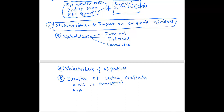Likewise, shareholders and management can be on one side versus the government on the other. The government wants taxes — if the government increases taxes, the bottom line reduces. Management performance is often assessed based on profits, and their bonuses are aligned to profits. If taxes increase, profits get reduced, bonuses get reduced, and the returns shareholders receive also get reduced. So there can be a conflict between shareholders and management on one side and the government on the other.